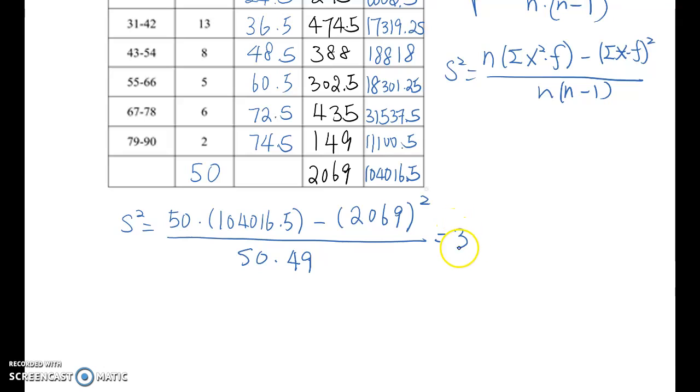Therefore, the standard deviation s equals square root of 375.5363. Then it's going to be 19.3788.